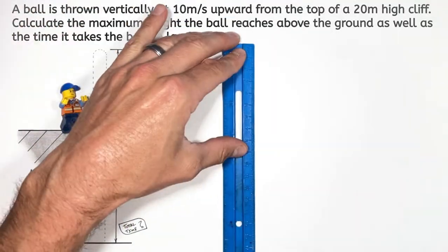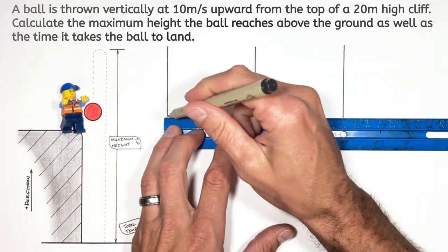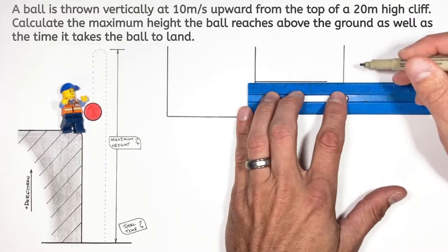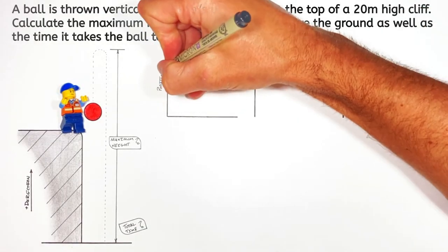Now to actually understand what's going on in this problem, first we're going to graph the position, velocity, and acceleration of the ball from when it's thrown until when it lands.